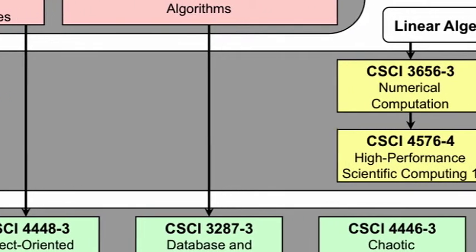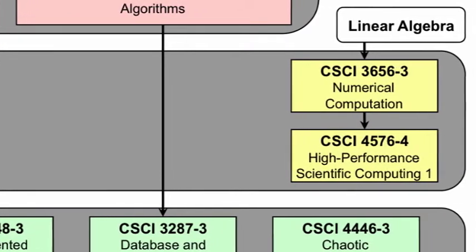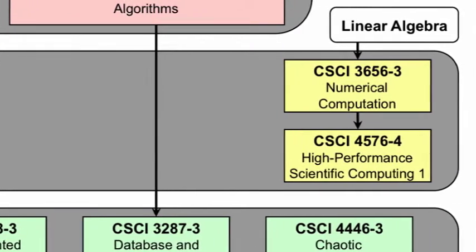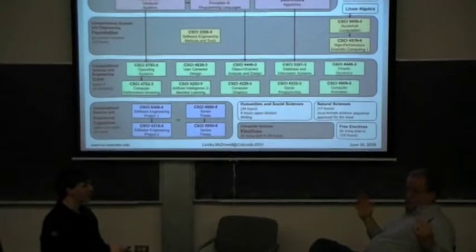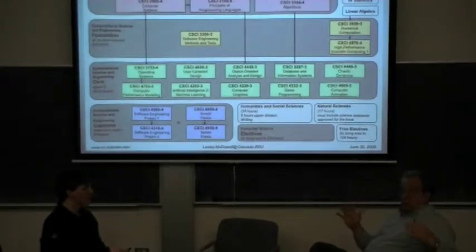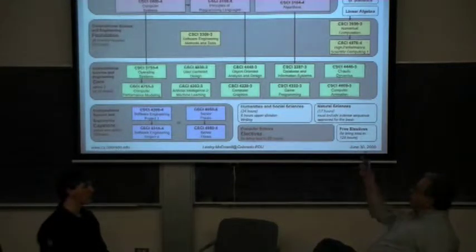One thing about computational science and engineering is you're going to be pushing computers to the frontiers of what they can do. You're going to be using the biggest and fastest computers, and that's why we have high performance scientific computing. Serious scientific computing is very often done on very large computers, on networks, with a lot of computers working together.